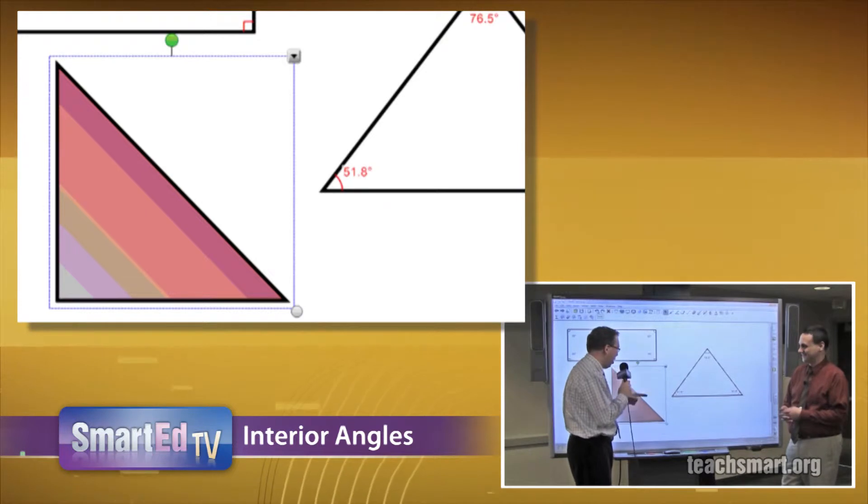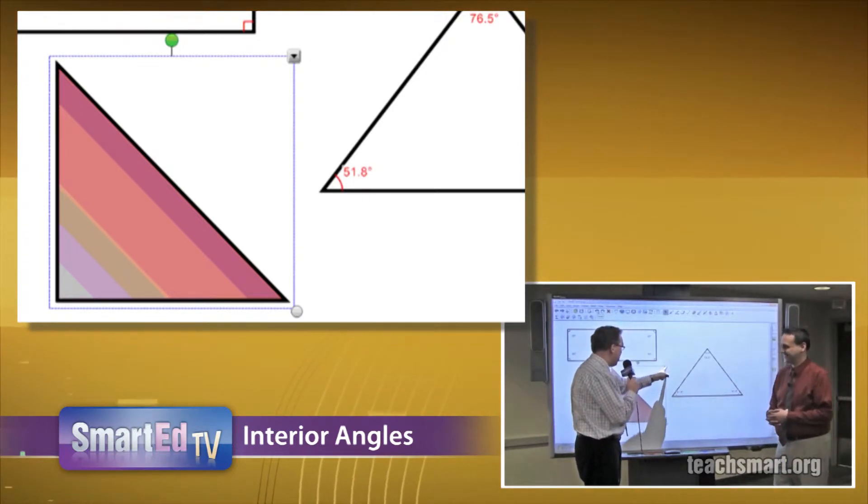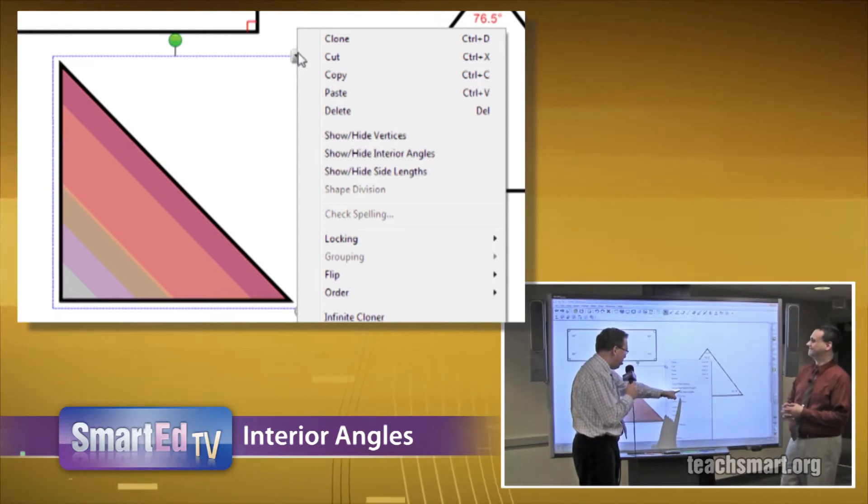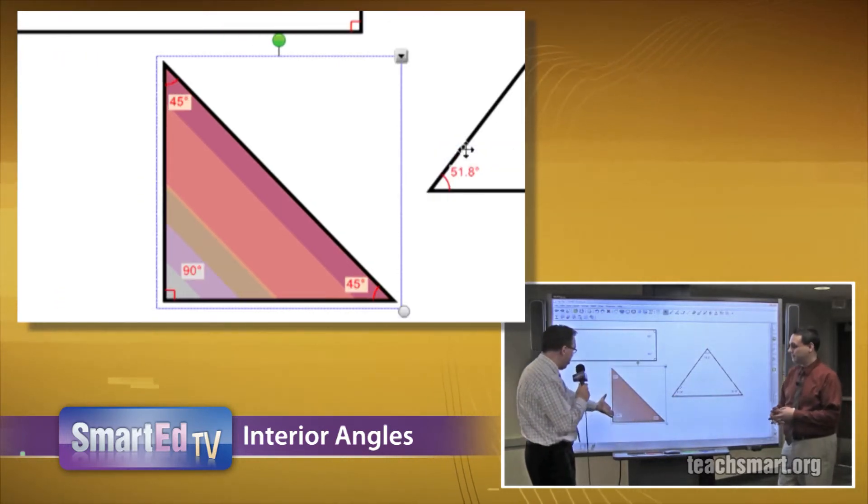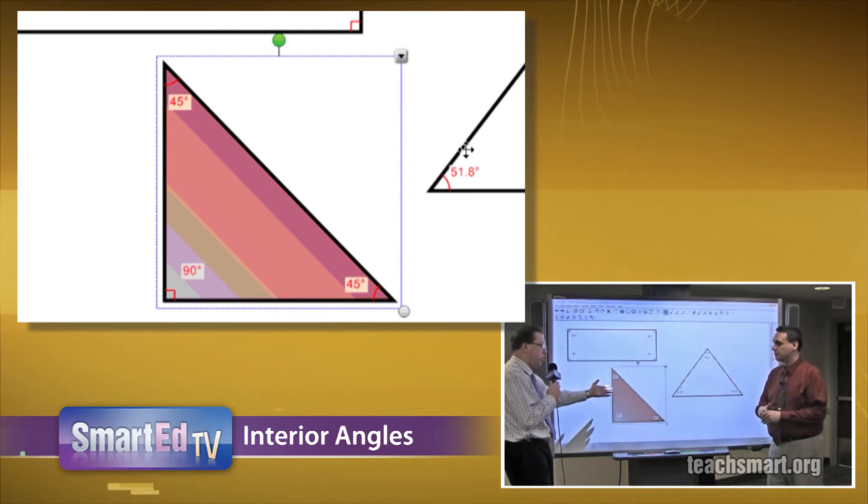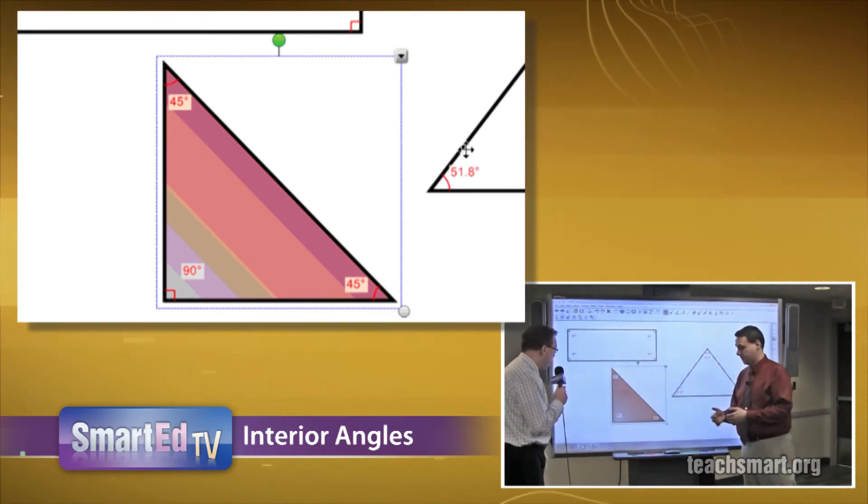So the drop-down, don't choose cut, and instead I want to choose show interior angles, and they're still there. And they're highlighted, so even if it's a red color, we can still see what the numbers are. Yep, easily. Yeah. Yep. Okay.